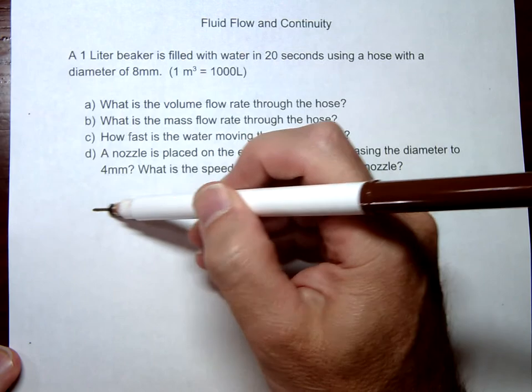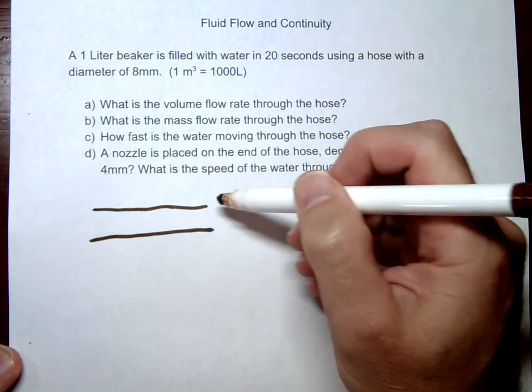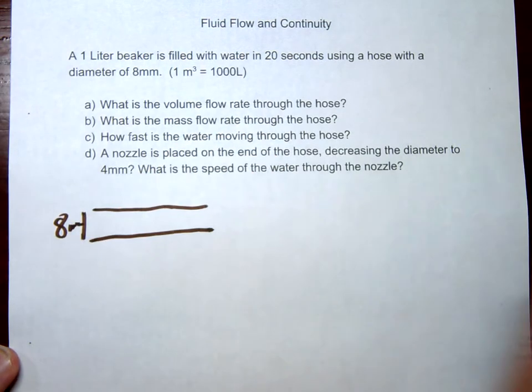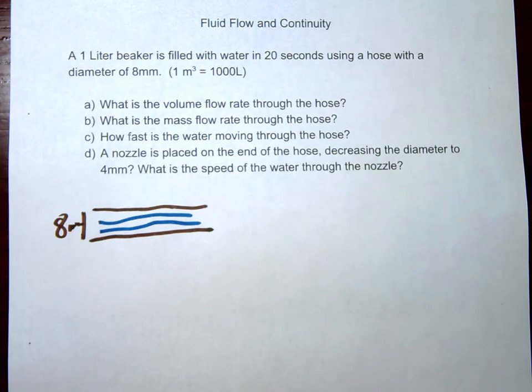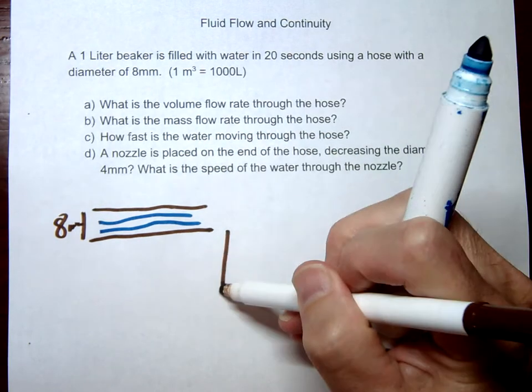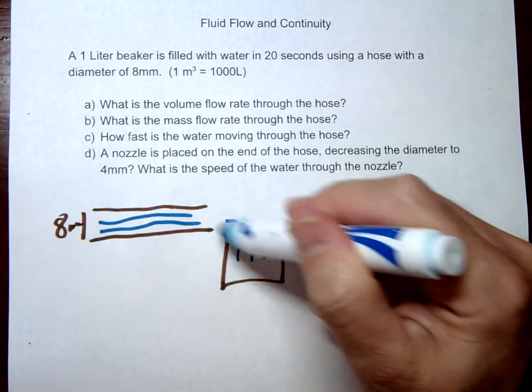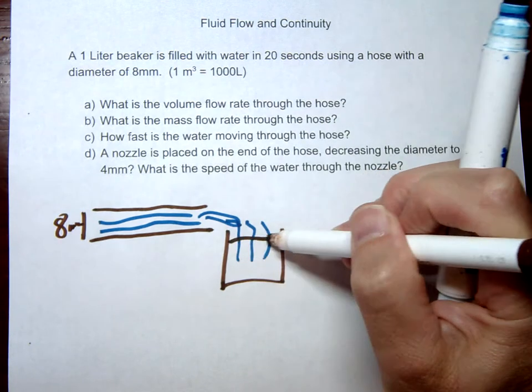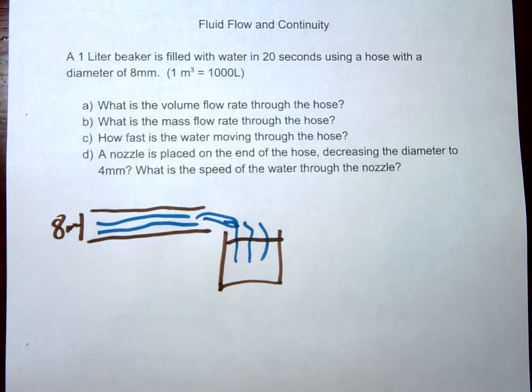So we have a hose and in this hose it has a diameter of 8mm and we're going to have some water flowing through the hose and essentially what we're going to do is we're going to fill up a beaker, one liter. Water flows through, we're going to fill up one beaker in 20 seconds. Alright, and then we're just going to go ahead and solve this problem.